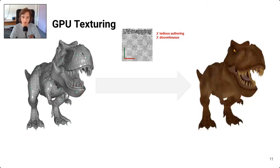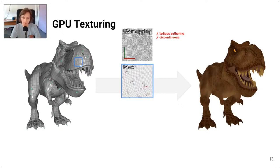Our second candidate is Ptex, which is Disney's standard texturing method. The idea is simple: rather than using a single texture for the entire mesh, use one texture for each face. The key feature of Ptex is that it is fully automatic since it directly builds upon the faces of the mesh. It frees artists from any UV authoring while also guaranteeing continuous texturing results over the entire mesh, as opposed to UV mapping.